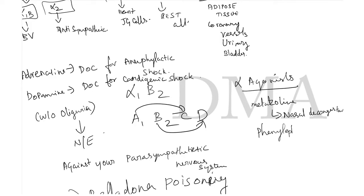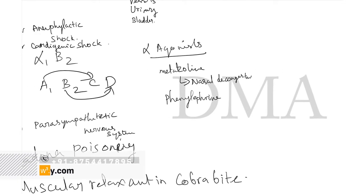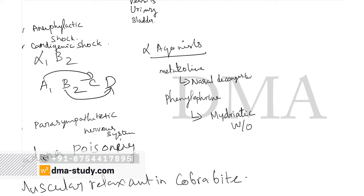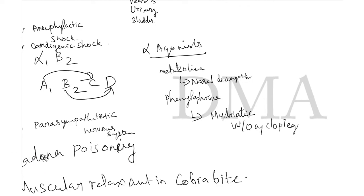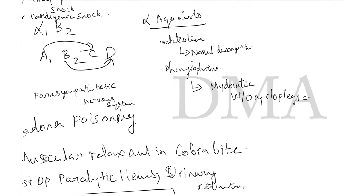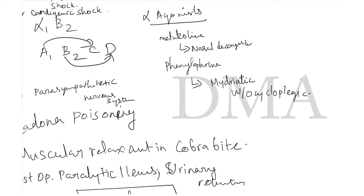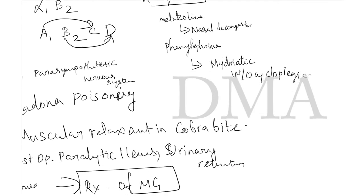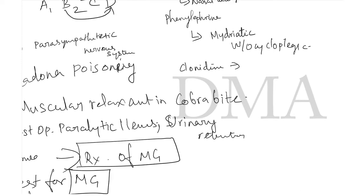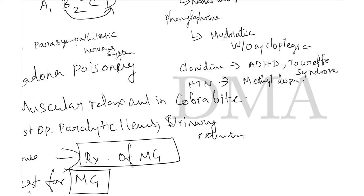Phenylephrine is a mydriatic without cycloplegic property — an important MCQ. Apraclonidine and brimonidine are useful for the treatment of glaucoma. Clonidine is used for ADHD and Tourette syndrome. Methyldopa is used for hypertension.